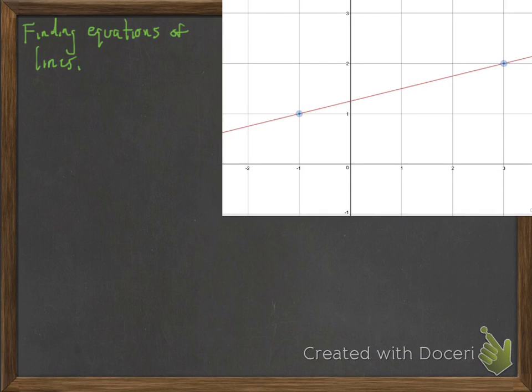Now we're going to talk about finding equations of lines. This is insanely useful. So I have a picture of a line here, and I have two points that I've chosen on that line. Those two points are negative 1, 1 and 3, 2. So we list points x, y, and since there are two points, I labeled them x1, y1 and x2, y2.